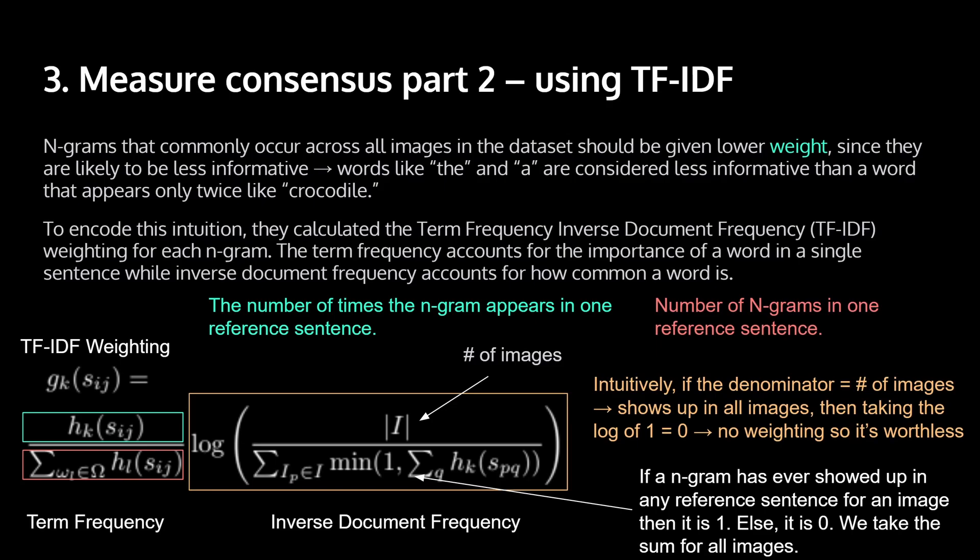So in order to encode this intuition, they calculated something called the TF-IDF, also stands for term frequency inverse document frequency. And they did this for each n-gram. So the term frequency accounts for the importance of a word in a single sentence, while inverse document frequency accounts for how common a word is. So let's look at the formula they gave us in the paper.